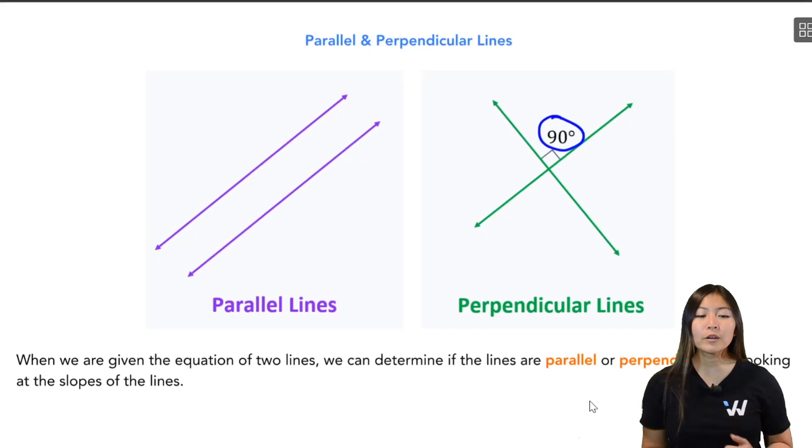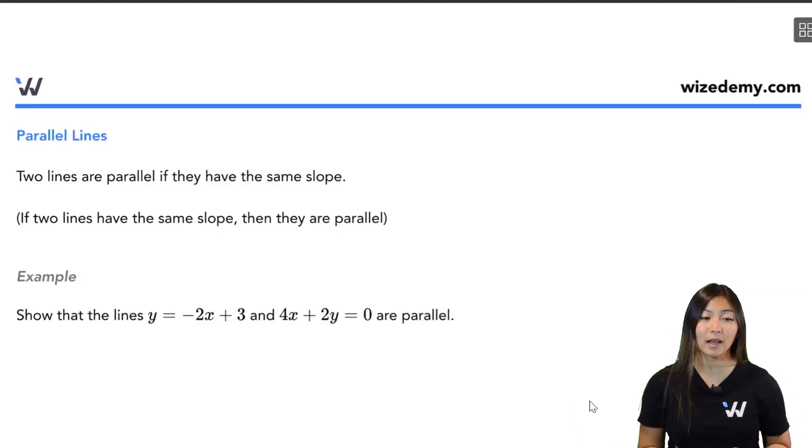So when we are given the equation of two lines, we can figure out if these lines are parallel or if they're perpendicular by looking at the slopes of the lines. Let's start with parallel lines. Two lines are parallel - so again side-by-side, forever and ever, they never touch - if they have the same slope.